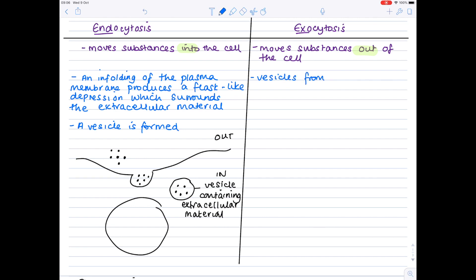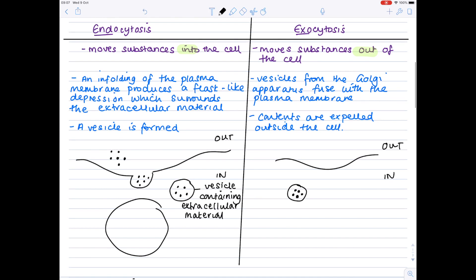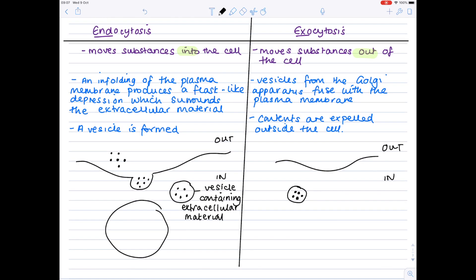Vesicles from the Golgi apparatus fuse with the plasma membrane. Contents are expelled outside the cell, crucially. Now those vesicles are formed from phospholipids. So if we draw a rough diagram again, here's the outside of the cell again, here's the inside. So here's our vesicle containing our intracellular material, which is moving towards the cell surface membrane. And so that when that vesicle fuses, it will add its extra phospholipids to the cell surface membrane, making it slightly bigger.